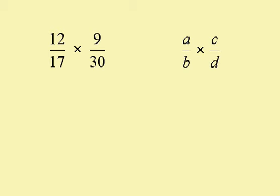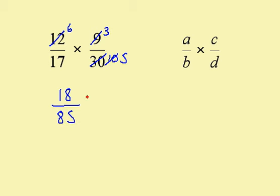When I'm multiplying fractions, I can cancel any top number with any bottom number. 3 goes into 9 three times, and 3 goes into 30 ten times. Now I can cancel the 12 and the 10. 2 goes into 12 six times, and 2 goes into 10 five times. Now I've simplified it, I can do this question easily. Multiply the two top numbers: 6 times 3 is 18; and multiply the two bottom numbers: 17 times 5 is 85. So this is my answer.